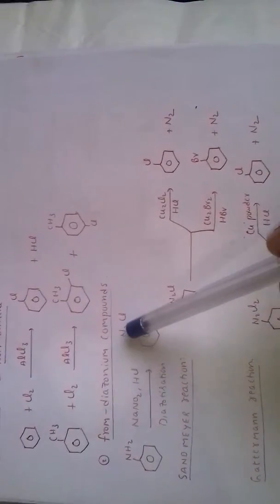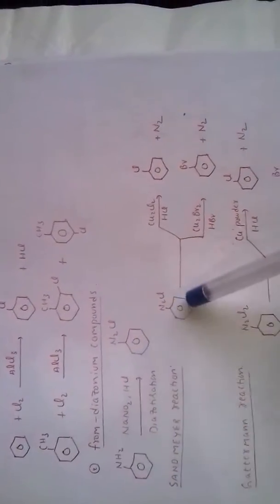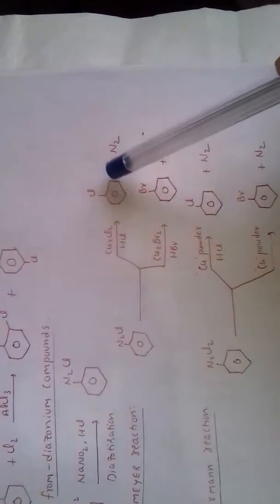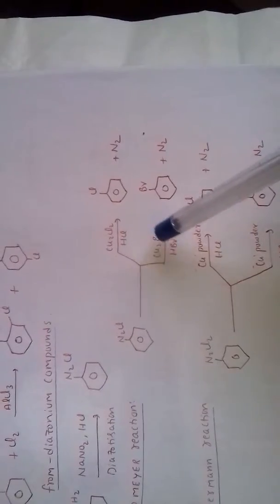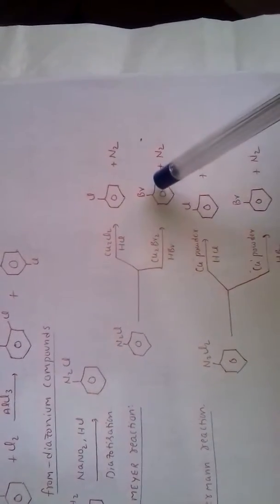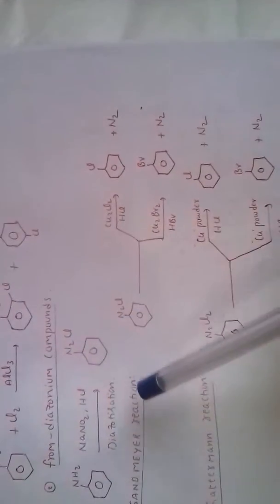When benzene diazonium chloride reacts with cuprous chloride in presence of HCl, it forms chlorobenzene. Cuprous bromide in presence of HBr forms bromobenzene. This reaction is known as Sandmeyer reaction.